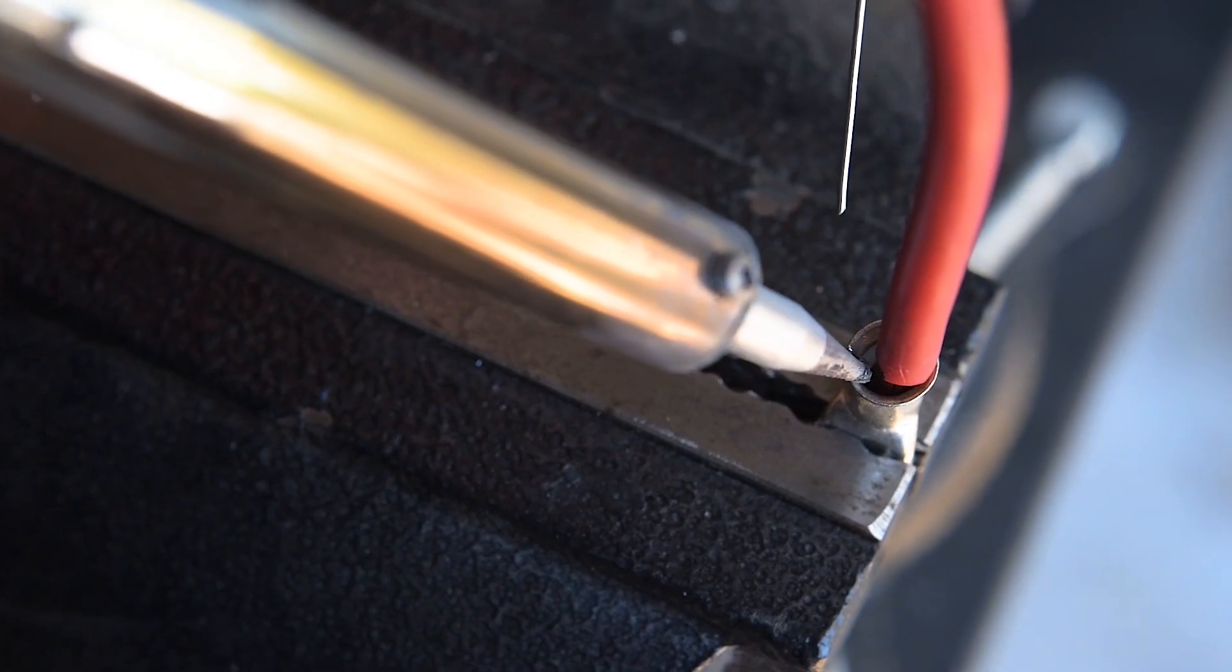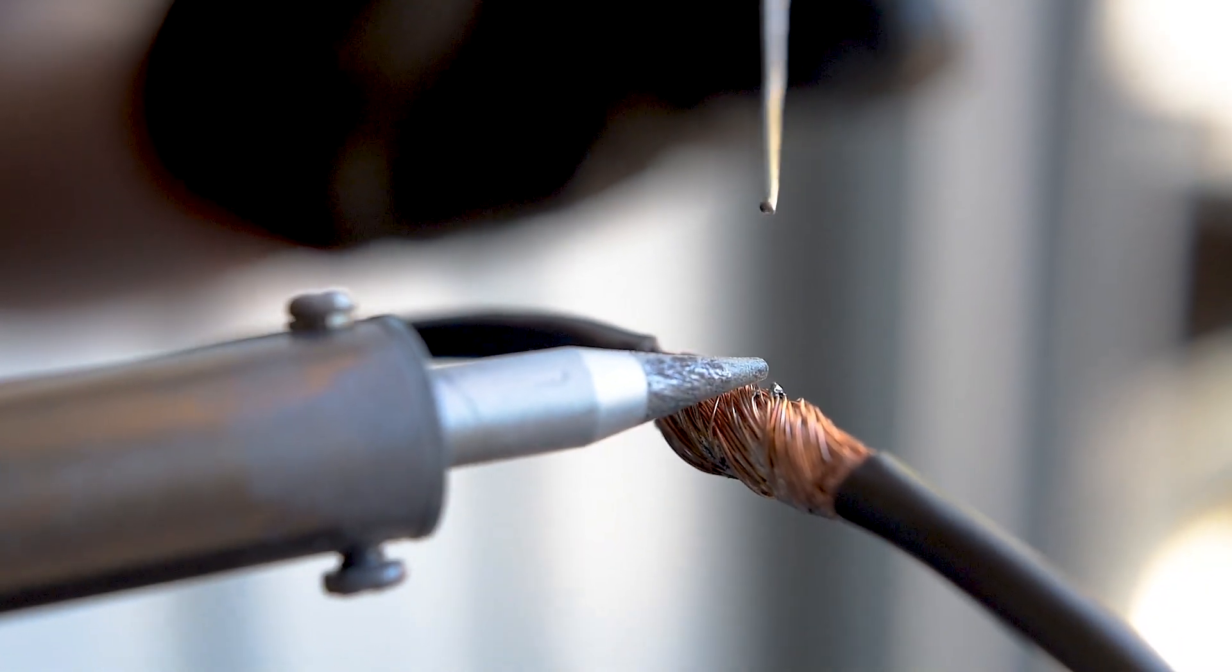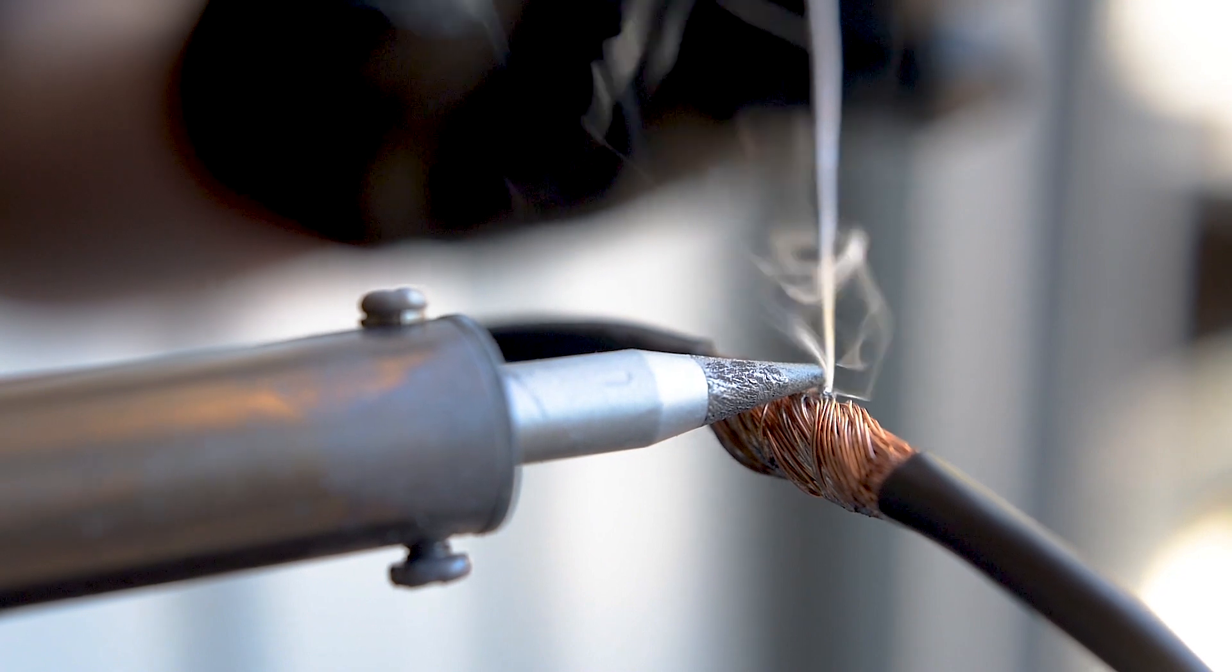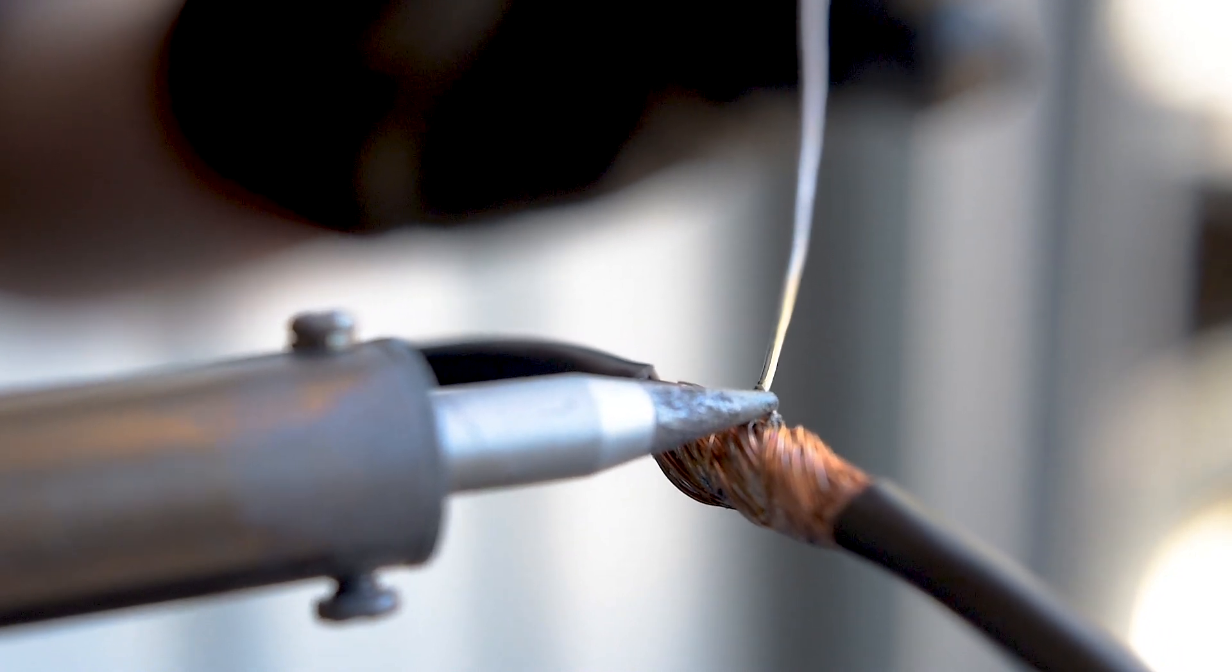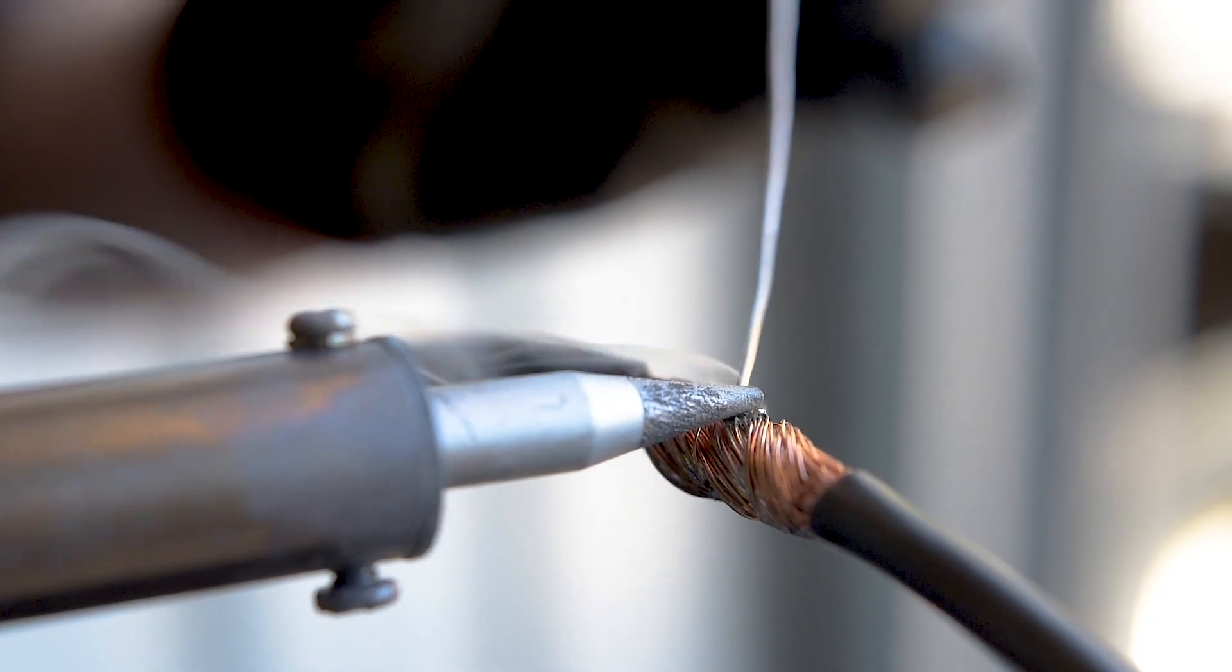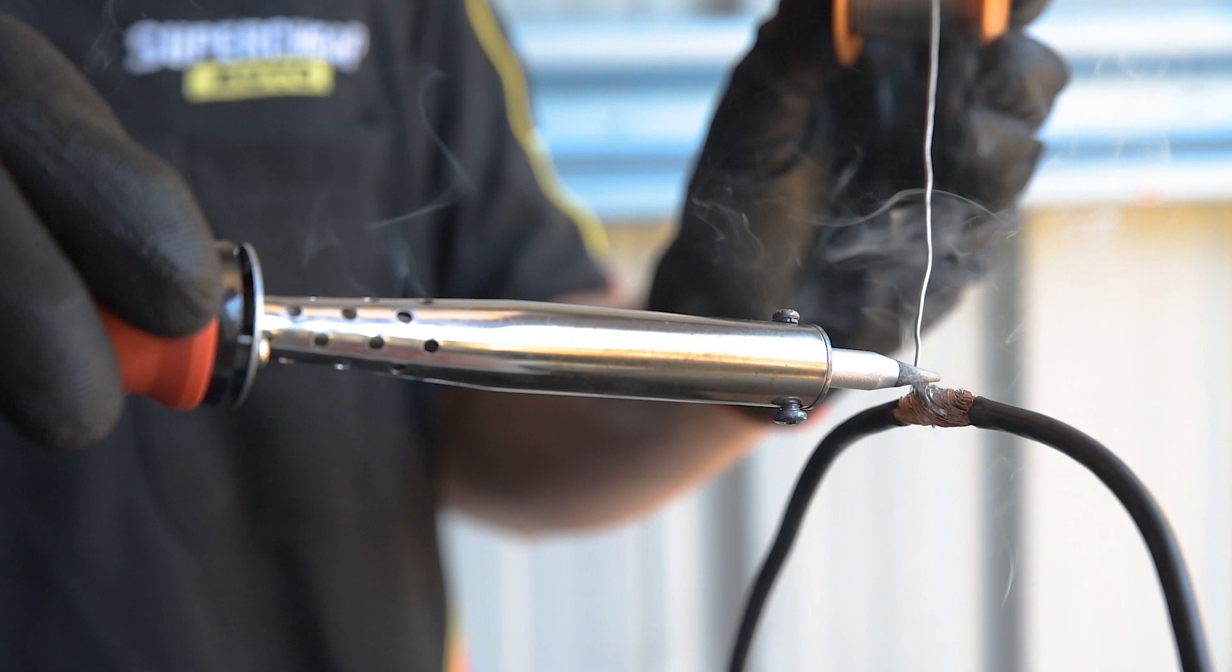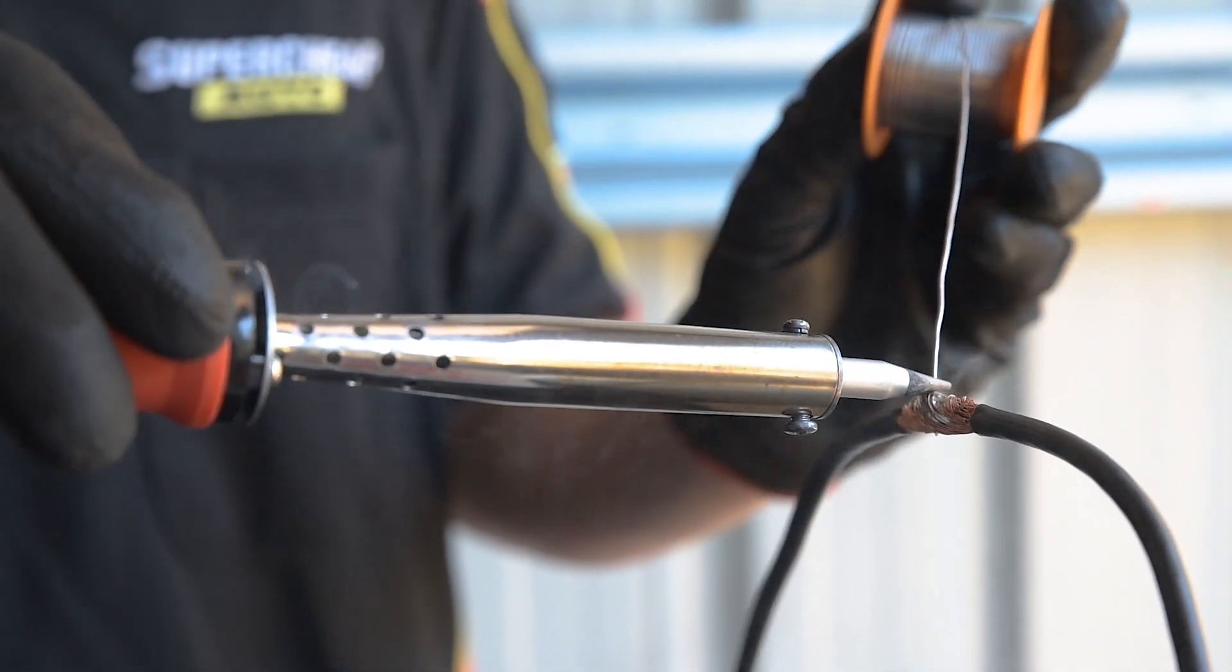Now touch the tip of the soldering iron to the joint and hold it there for a moment. You want just enough heat in the joint to allow the solder to flow. Keep the soldering iron in position and slowly introduce solder at the point where the iron meets the join. The solder should glide into the join without sticking or stabbing and you should see solder flow smoothly through the wire.